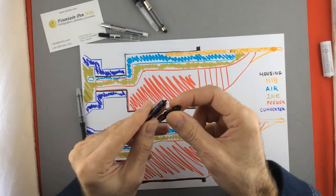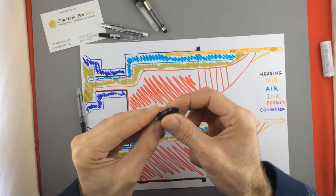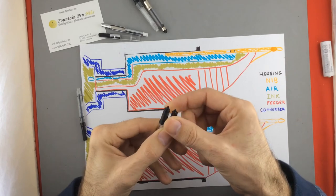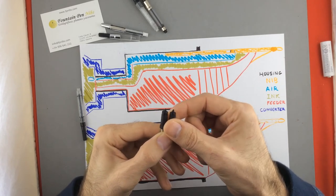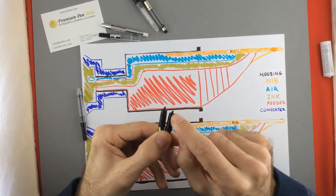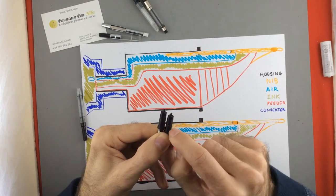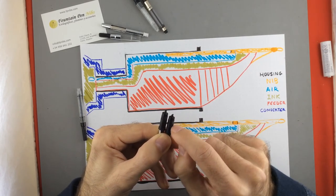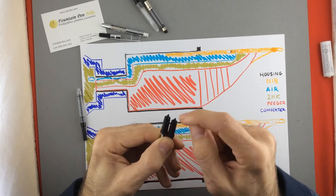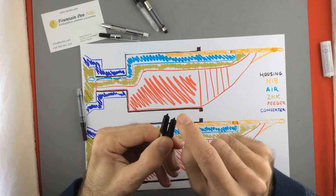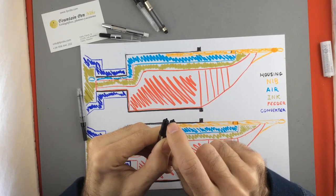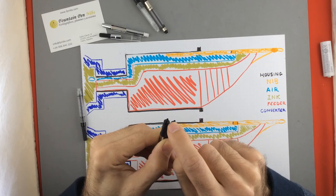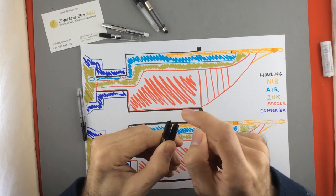In this case maybe here the rod is all the way into the section. And the feeder can touch the ink and the air channel will allow the air to come into the converter.